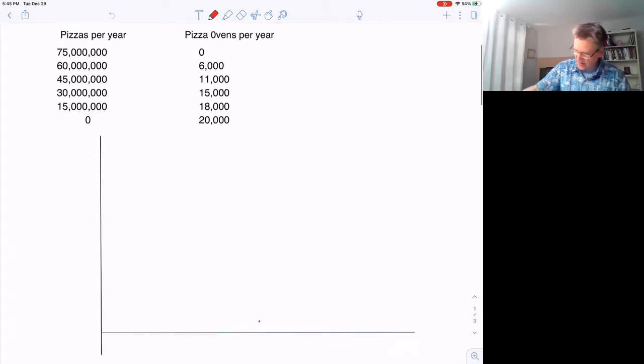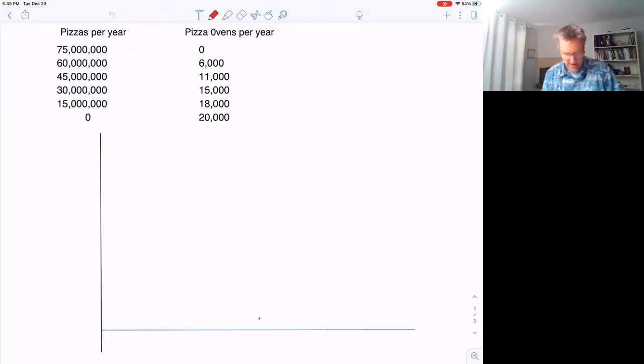So in this module, you're given the information that society can only produce two things, pizzas and pizza ovens. And if we draw this, we'll put pizzas over here and ovens over here.